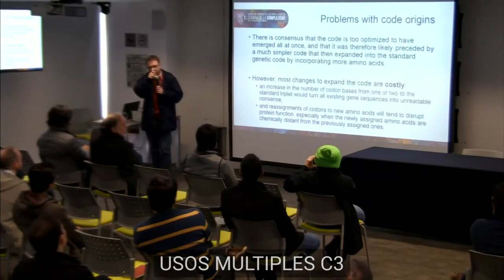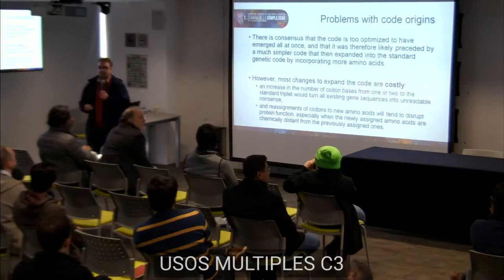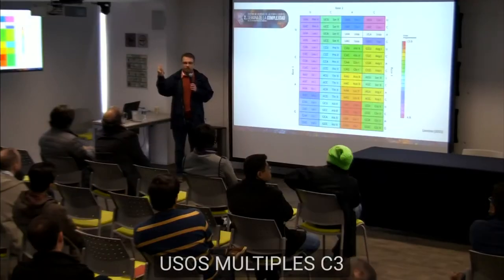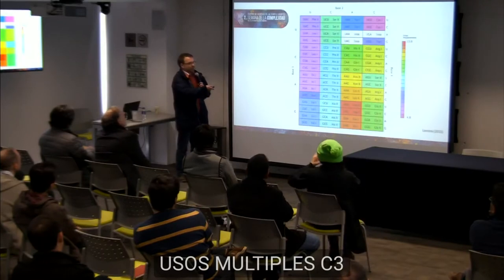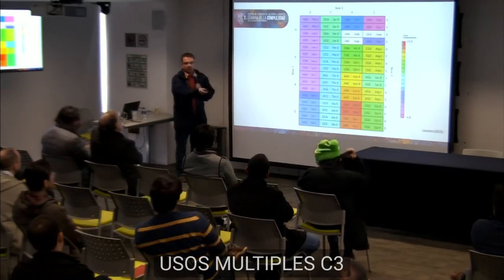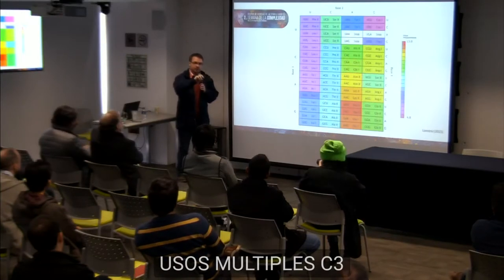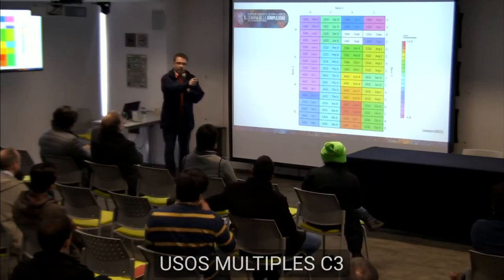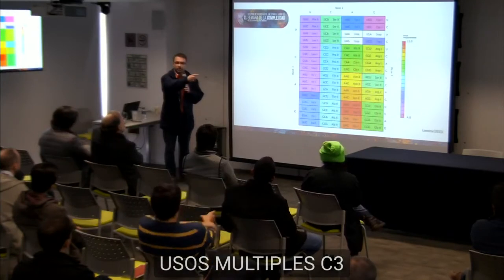The problem is that if the genetic code changed over time, most changes turn out to be costly. If we imagine increasing the number of amino acids specified — say from 10 to 20 — at some point we have to change the way one codon is assigned. But that means all previous gene sequences, which encoded a certain protein, will no longer function properly because the codons they depended on now code for something different.